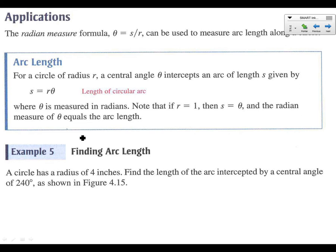An arc length is in a circle from one point to another. On that circle is an arc. We want to figure out that length. We can use this formula: S equals R times theta, and theta needs to be in radians. If it's in degrees, you need to switch it over.